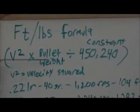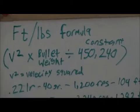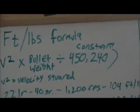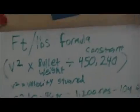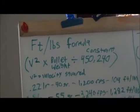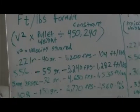So what we have here is the foot-pounds formula, which is velocity times velocity, or velocity squared, times bullet weight, divided by 450,240. That's a constant number. I don't know where they came up with that number, but scientists somehow just came up with it.